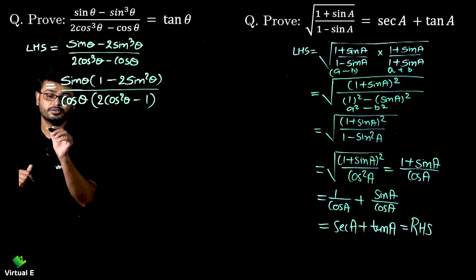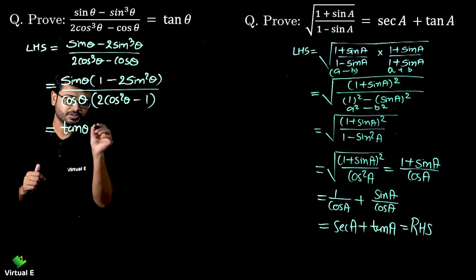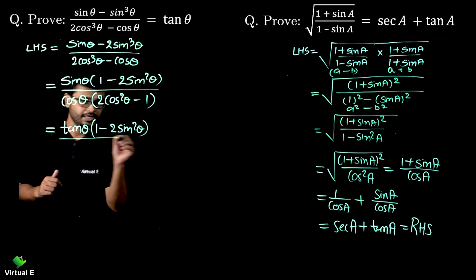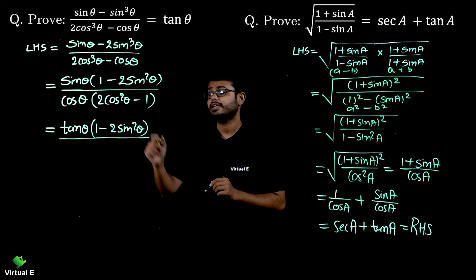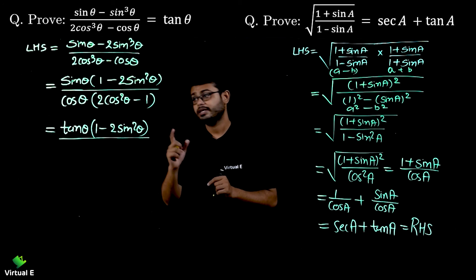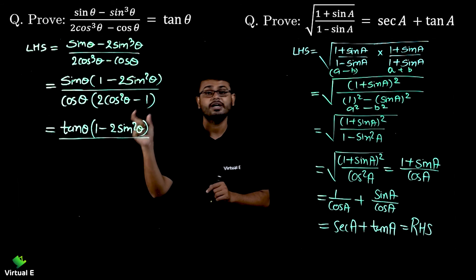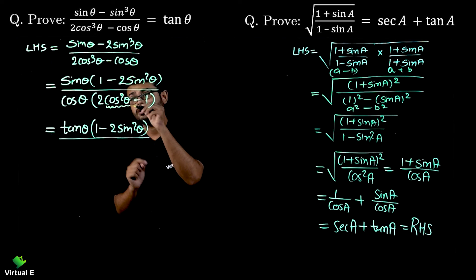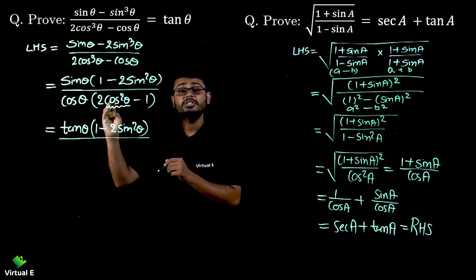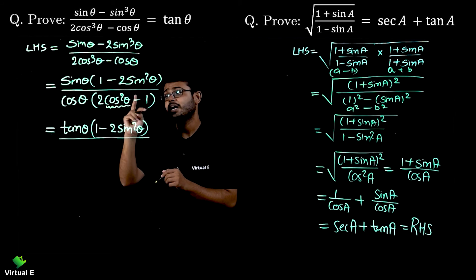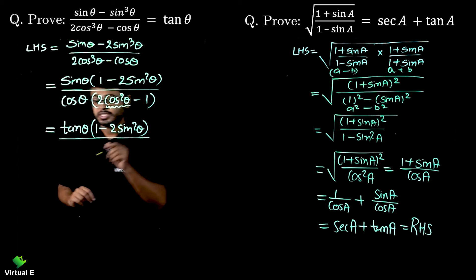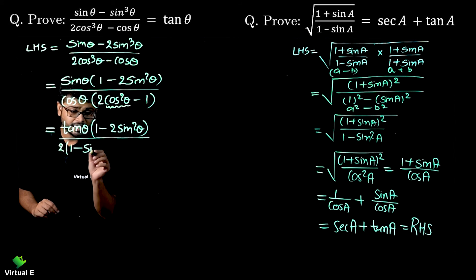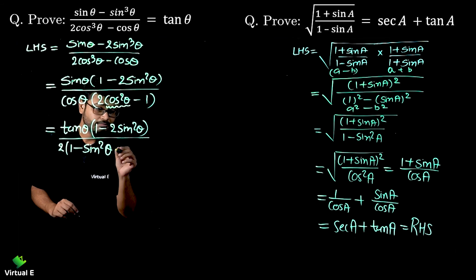We can see that sinθ/cosθ = tanθ — we are near our answer. But we need to eliminate the remaining terms first. So I'm going to replace cos²θ using the identity sin²θ + cos²θ = 1, writing cos²θ as (1 - sin²θ). I will only replace cos²θ, not the 2. So the denominator bracket becomes 2(1 - sin²θ) - 1.